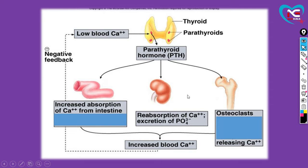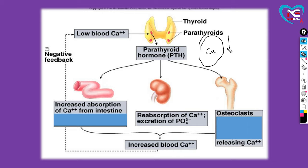Ab dekh lete hain normally kya hota hai. Jaisa ki aap yahan pe dekh rahe ho, parathyroid glands apna PTH yani parathyroid hormone secrete karna start karti hain. Yeh PTH kab start hota hai? Jab pata chalta hai calcium level kam ho raha hai. Toh jab calcium level kam hota hai, parathyroid gland PTH hormone start karti hai. Yeh PTH hormone teen jagah function karta hai - ek hai aapki intestine, doosra hai aapki kidney, aur third hai aapki bone.